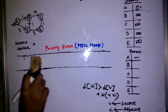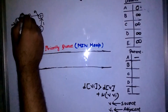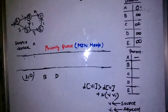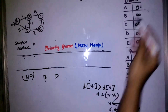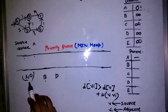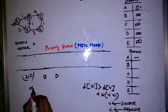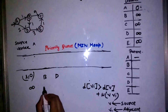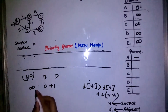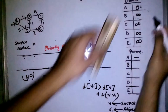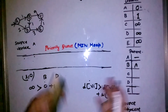If I extract the minimum, I get A with priority zero. The adjacent vertices of A are B and D. For B: distance to reach B is infinity, and distance to reach A is zero plus weight of edge A–B which is one. Since infinity is greater than one, we update the arrays: distance of B becomes one, and parent of B is A.